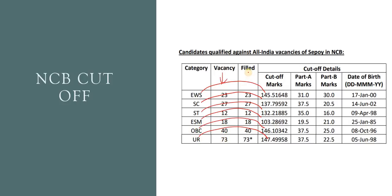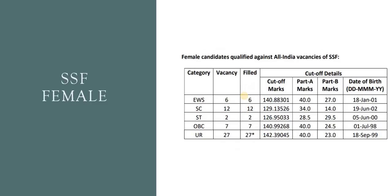You can see all the vacancies in the fill. You can see all the female cutoff: EWS is 150, SC is 150, ST is 150, OBC is 150, UR is 150.